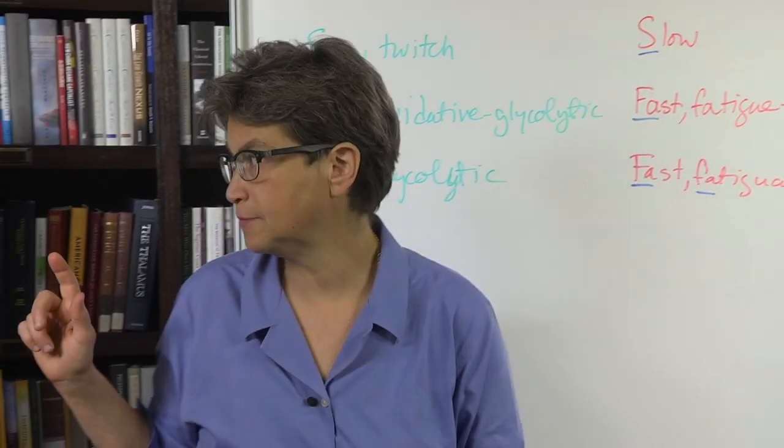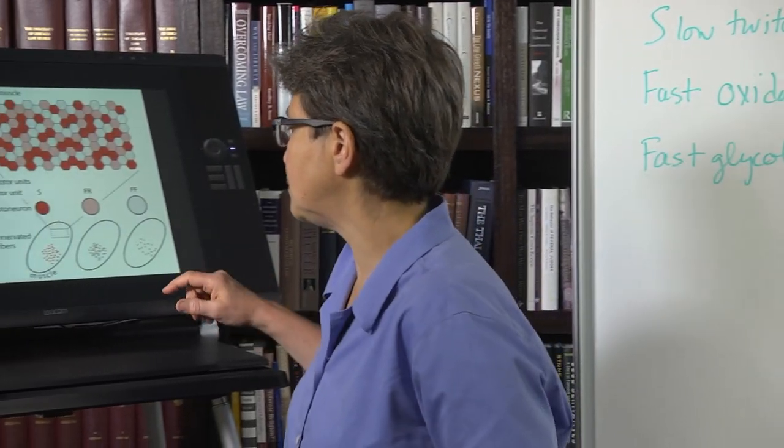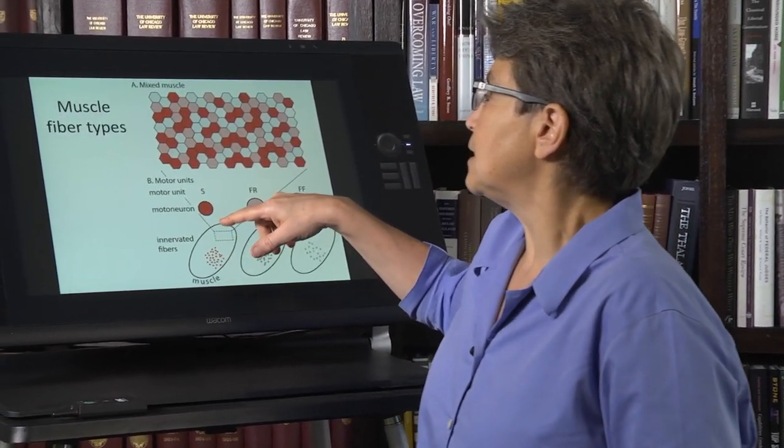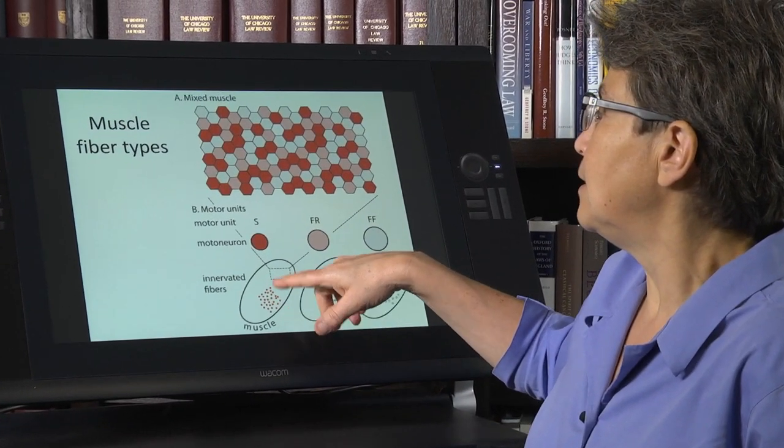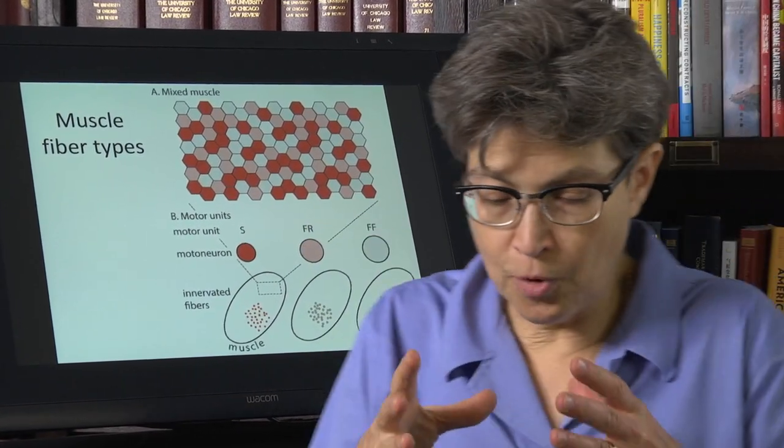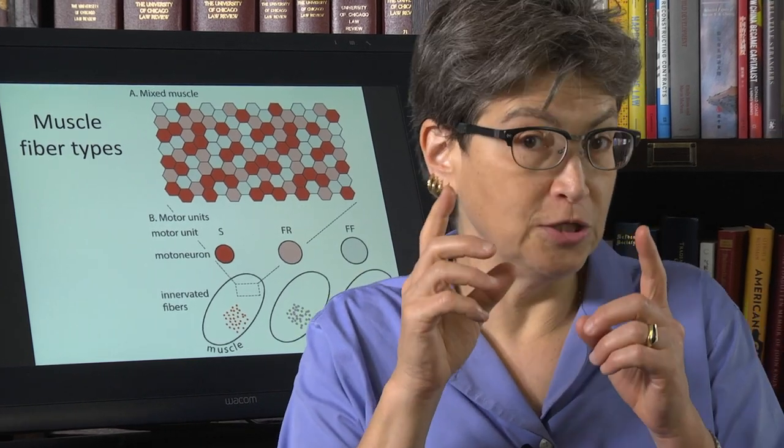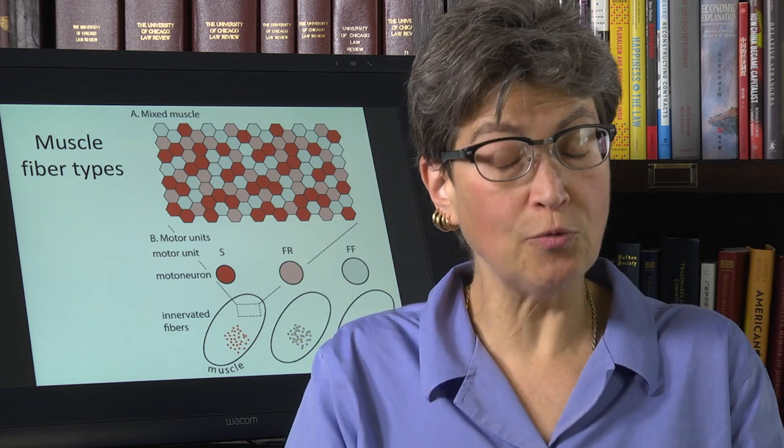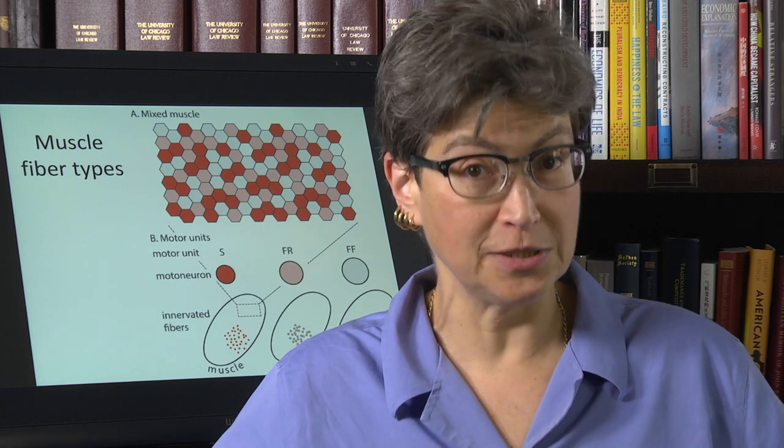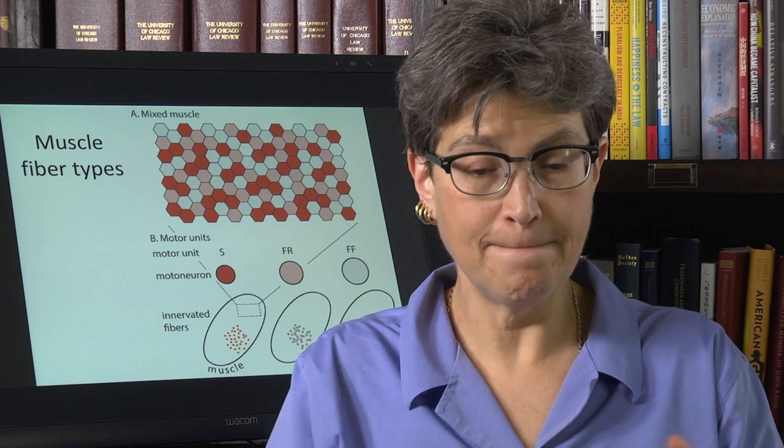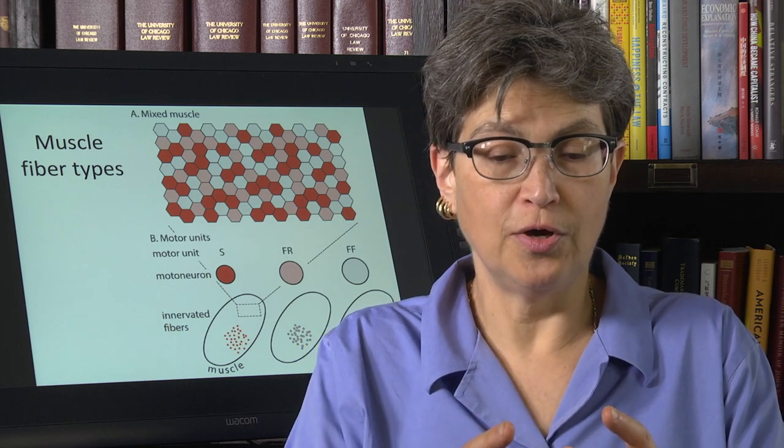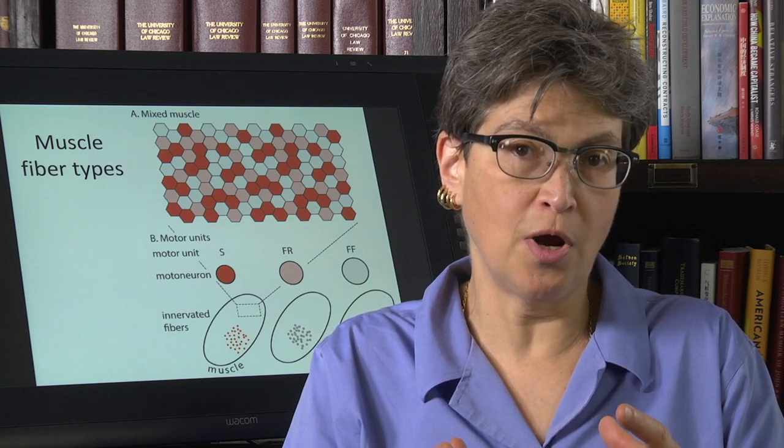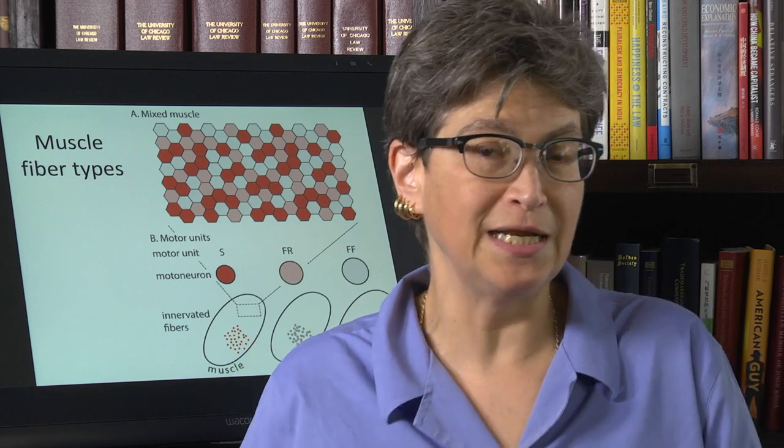And what you see is that the motor neuron is going to provide the sole innervation to a muscle fiber, but the motor neuron will innervate a number of muscle fibers. So the motor neuron and the muscle fibers that it innervates,